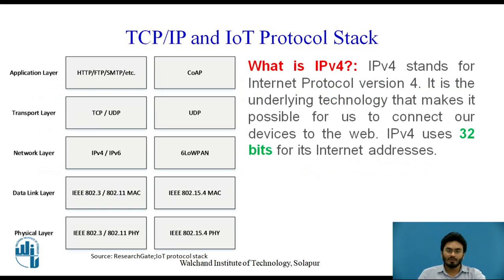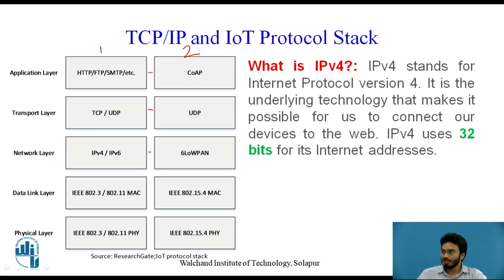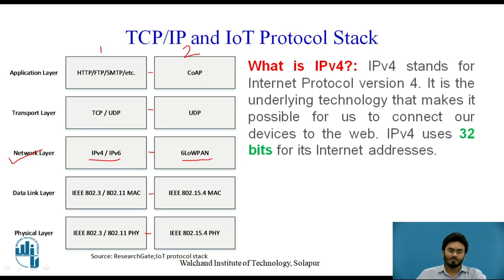Let us have a deeper look into the TCP/IP and IoT protocol stack. As you can see, we have two columns: the first being the TCP/IP protocol stack and the second being the IoT protocol stack — a head-to-head comparison. What we are going to discuss today are the network layer protocols, which include IPv4, IPv6, and 6LoWPAN, whenever a network is set up between two IoT devices.